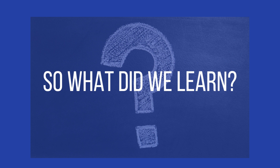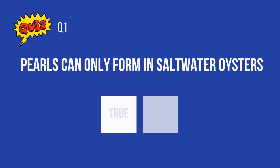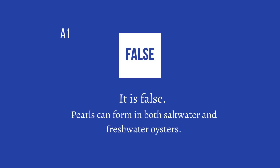So what did we learn? Let's try a quiz. Question 1: Pearls can only form in saltwater oysters — true or false? The answer is false. Pearls can form in both saltwater and freshwater oysters.